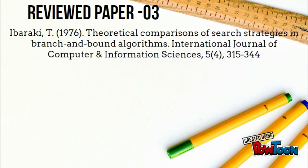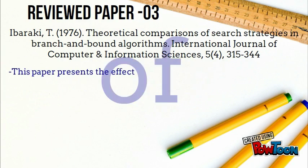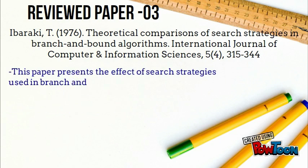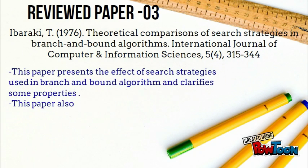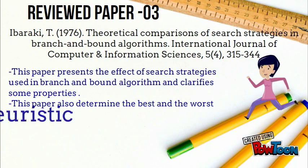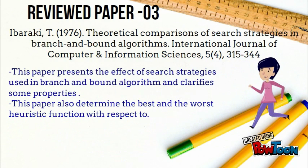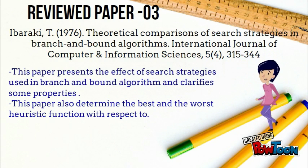Review Paper 3: This paper presents the effect of search strategies used in branch and bound algorithm and clarifies some properties. This paper also determined the best and the worst heuristic function.